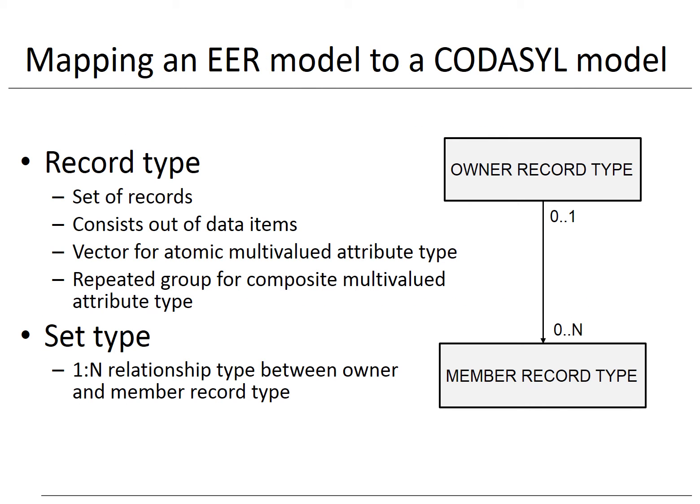Let's start by discussing how we can map an EER model to a codicil model. This is an example of a situation where our conceptual data model is richer in terms of semantics than our logical model. Hence, we will obviously lose semantics during the mapping and it is important that this is accurately documented. Before we start discussing the mapping, let's briefly revisit the two key concepts of the codicil model: record types and set types.